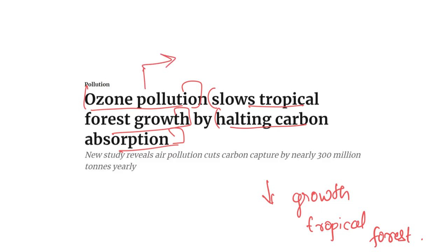Ozone at the troposphere is itself a pollution. In addition to causing pollution, it is also slowing the growth of tropical forests. That is the greatest finding by the research.